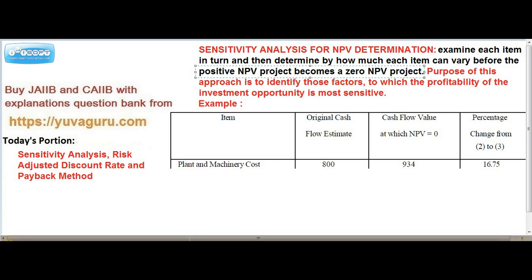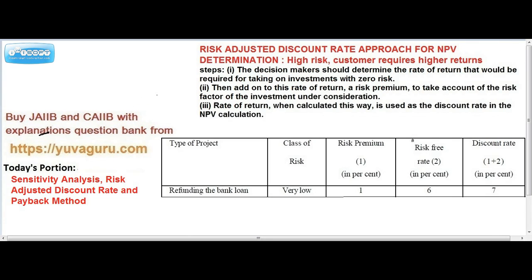Then we will study risk adjusted discount rate. What we do is we first calculate all the rate of returns for 0 risk by the normal method of NPV and IRR. This is a calculated NPV and IRR for 0 risk. But if I add some more risk like labor strikes or electricity issues or there are some attacks, then it gives me some higher risk.